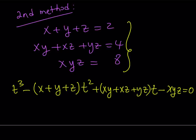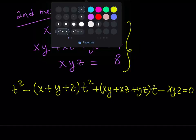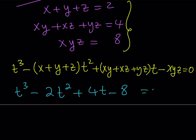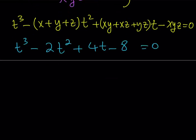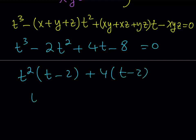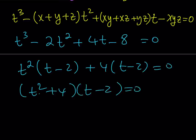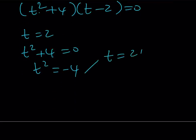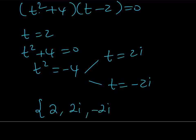This gives us t cubed minus 2t squared plus 4t minus 8 equals zero. And this is factorable by grouping — that's what makes it so awesome. We can write it as t squared times (t minus 2) plus 4 times (t minus 2), which brings us to (t squared plus 4)(t minus 2) equals zero. From here, t equals 2, meaning one of the roots is 2. The second part comes from t squared plus 4 equals zero, giving t squared equals negative 4, so t equals 2i or negative 2i — and again you get all the possible solutions from Vieta's formulas.